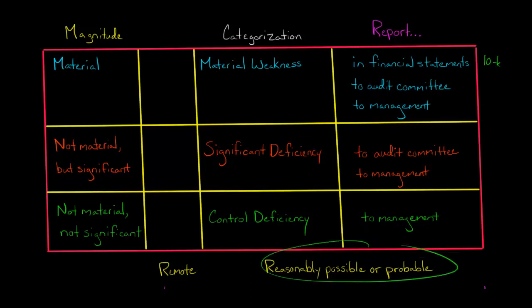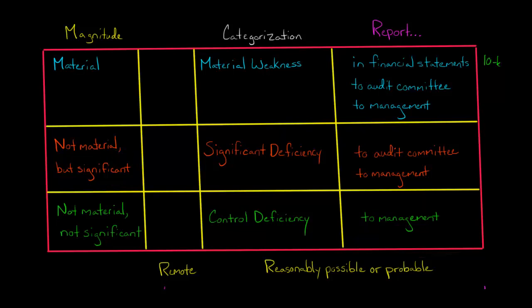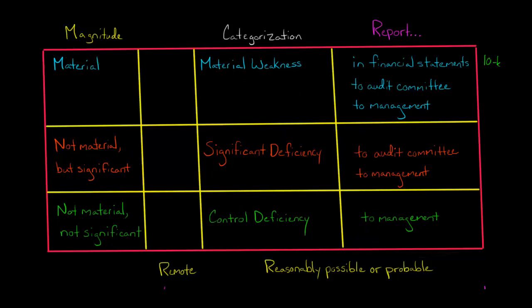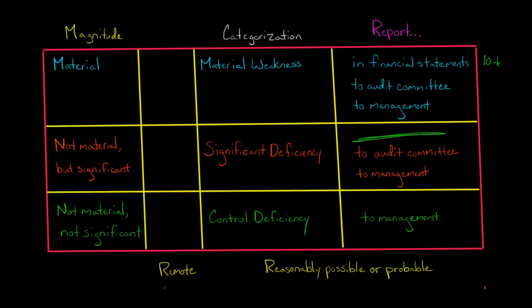However, if it's reasonably possible or probable, but it's not material — though it would still be a significant effect if this control were to fail — then this is a significant deficiency. It's like a material weakness except the magnitude is significant rather than material. You have to report it to the audit committee and to management, but it does not go in the financial statements — it does not go in the company's 10K.